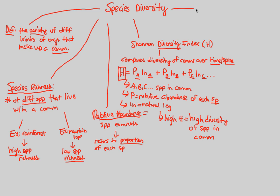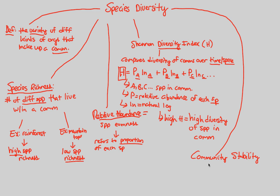The last thing we're going to look at regarding species diversity is community stability. We ask ourselves this final question: does diversity affect stability? Does it affect the way a community works, succeeds, has difficulty, or evolves? All of these effects are part of stability. Is diversity a part of this effect? Will it have any impact?